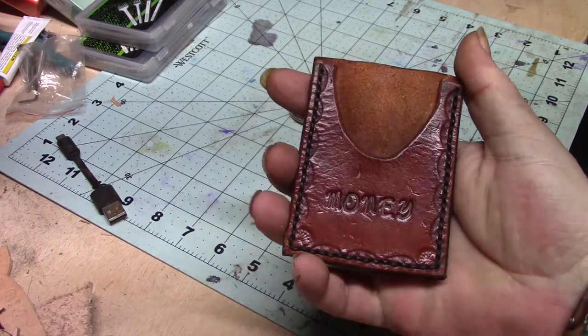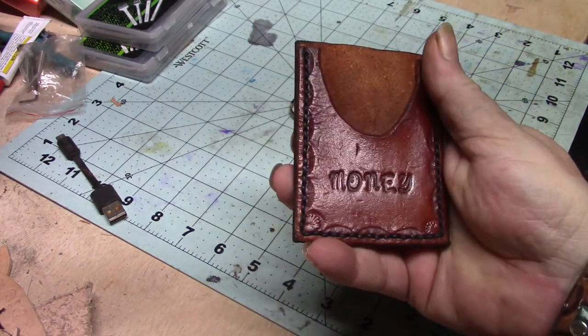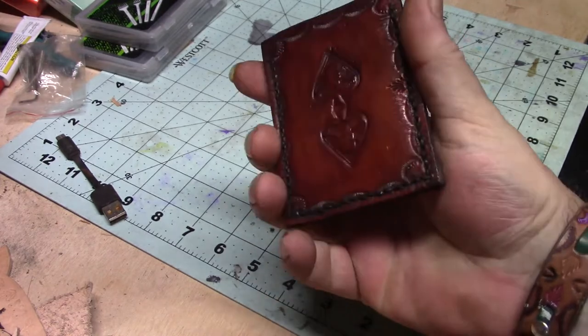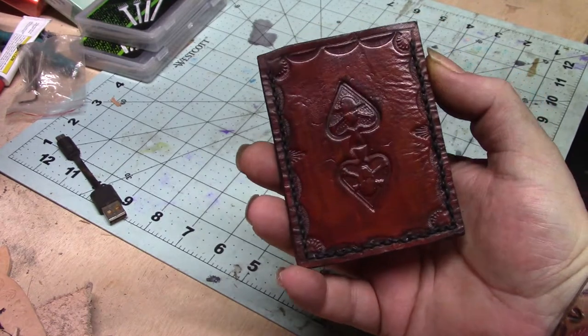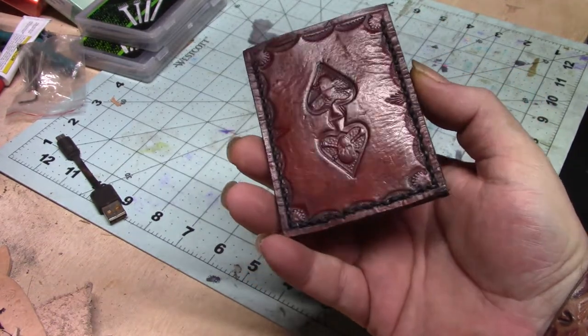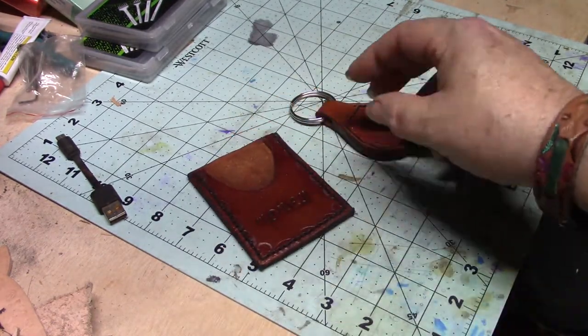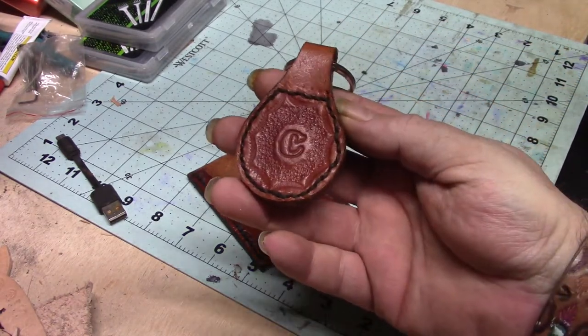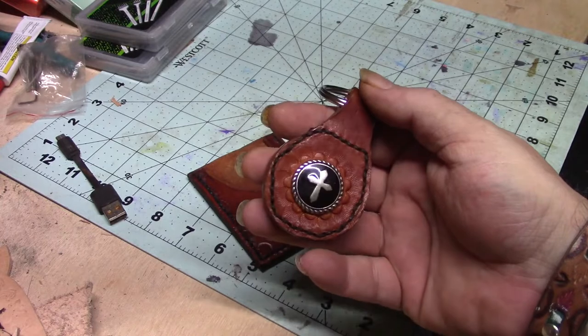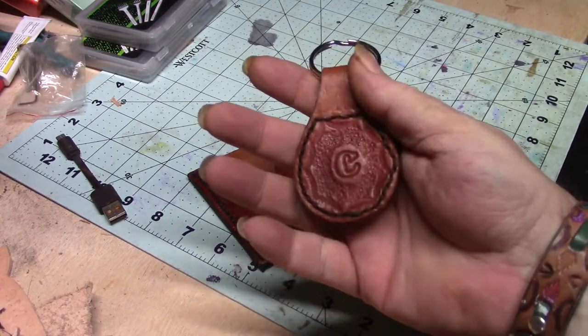Making little things like a card wallet, practicing some stamping and stuff, still working on getting better. You can tell that this isn't perfect by any means. And the stitches aren't quite as aligned as I would like.